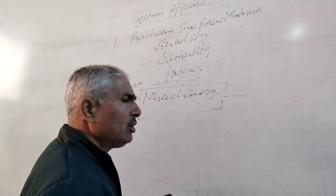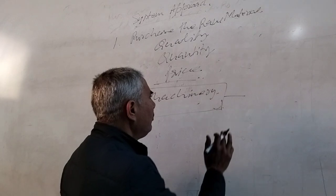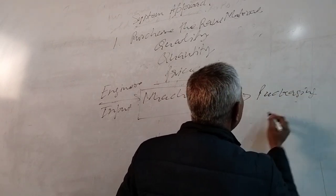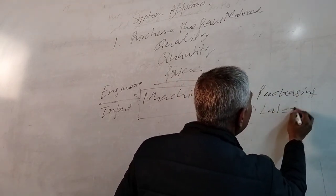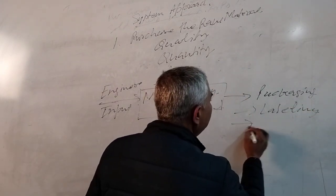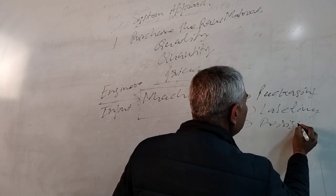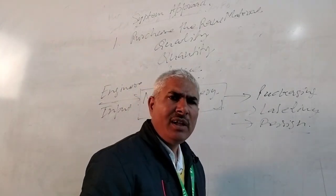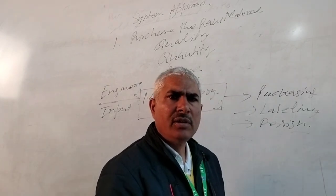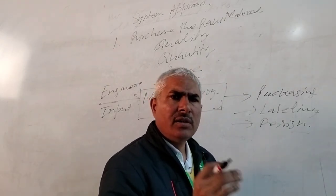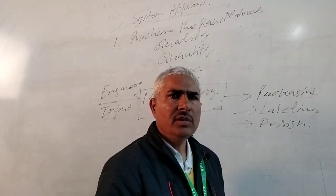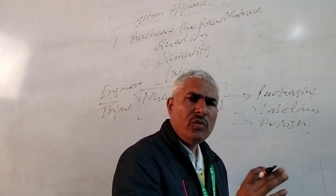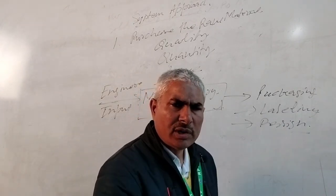After conversion of the raw material into finished goods, we follow the system. Then we find out the market for the product. After finding the market, our product goes from raw dealer to finished goods, and we sell out the product to the market.